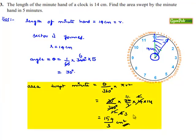Therefore, the area swept by the minute hand in 5 minutes is 154/3 cm².